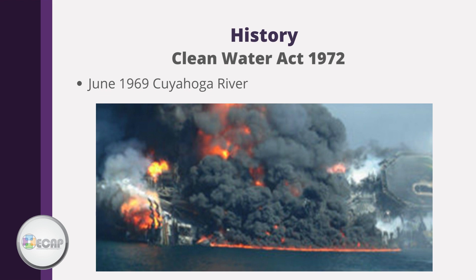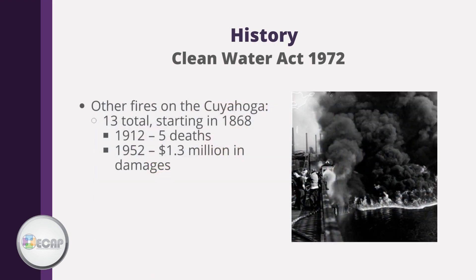Flammable petroleum products were being dumped directly into the river by nearby industries, and the fire burned for over two hours, with flames reportedly reaching heights of over 50 feet. There have been 13 fires on the Cuyahoga River starting in 1868. The fire of 1912 was the most deadly, causing five deaths, while the fire of 1952 was the most destructive, causing $1.3 million in damages.